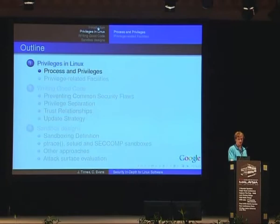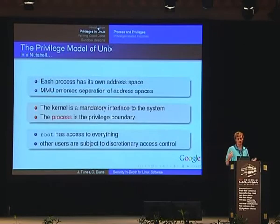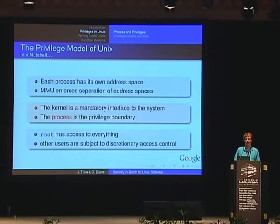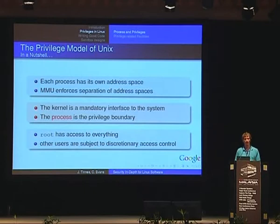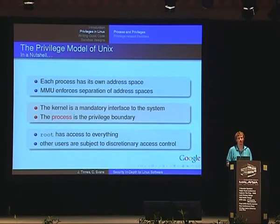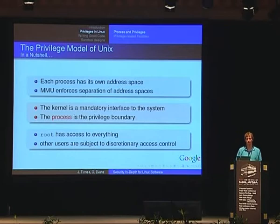In the first part I will talk about process and privileges in Linux in the classical sense, just as a quick reminder. The privilege model of Unix in a nutshell: each process has its own address space, and the processor MMU enforces separation of different address spaces. The kernel is a mandatory interface to the system from a process perspective, and the process is really the privilege boundary — you associate a privilege with a process. In the standard Unix security model, root has access to everything and other users are subject to discretionary access control.